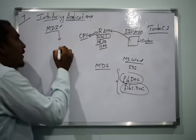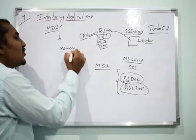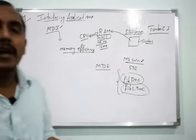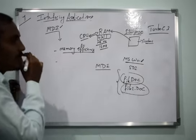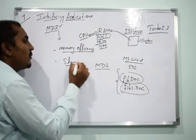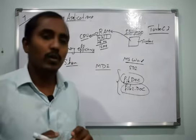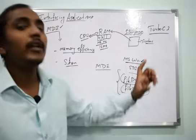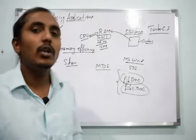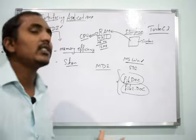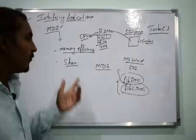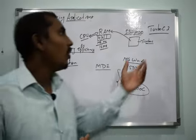Whenever you use MDI, it increases memory efficiency. A second important feature of MDI is resource sharing — for example, a common menu can be shared by all documents. In SDI, each file would have its own separate interface and its own separate menu, whereas MDI allows sharing resources across all open documents.